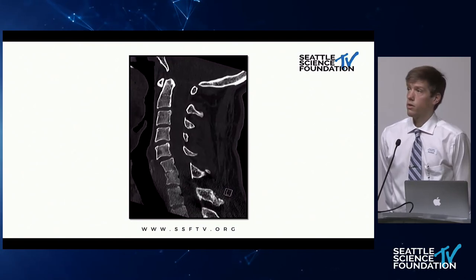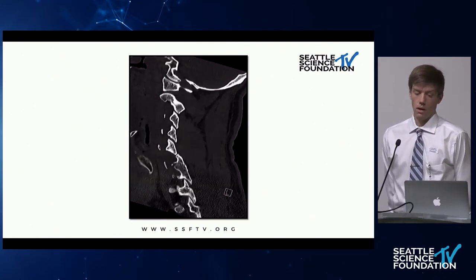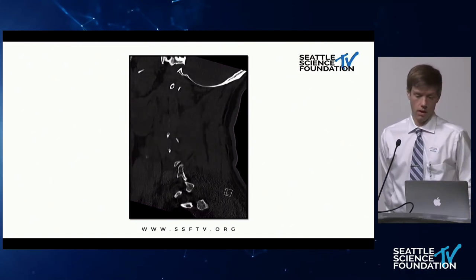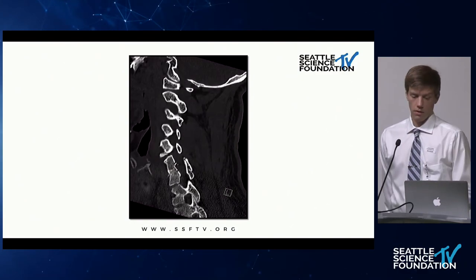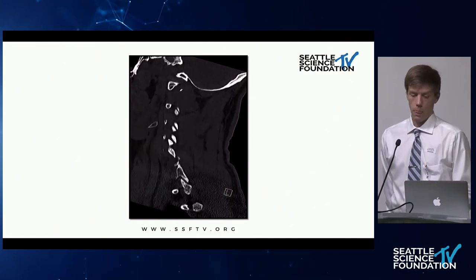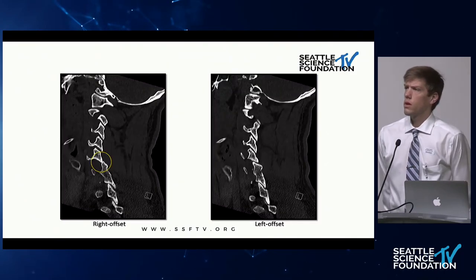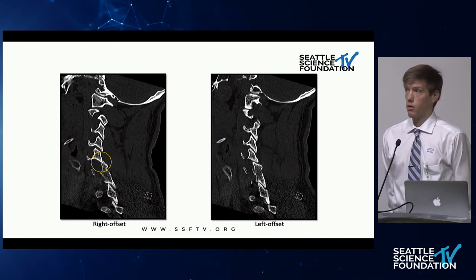This is a cervical spine CT scan done in the emergency department. As you can see on this slide, the patient did have a right C5 perched facet, circled in yellow.